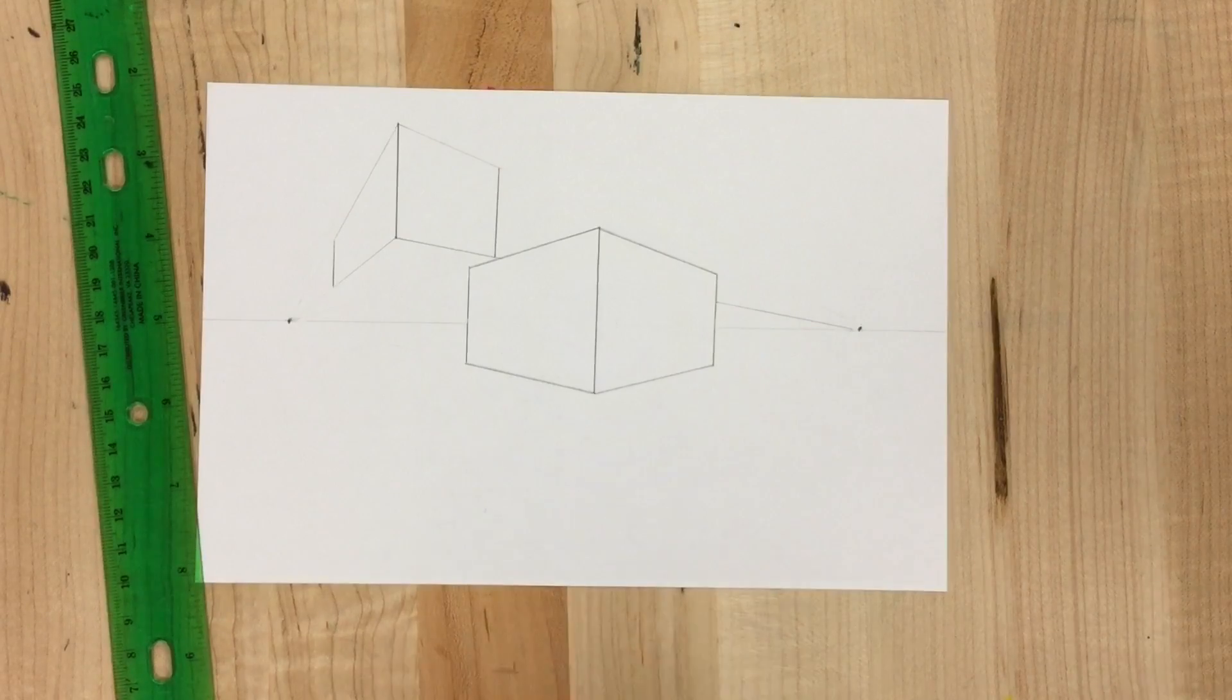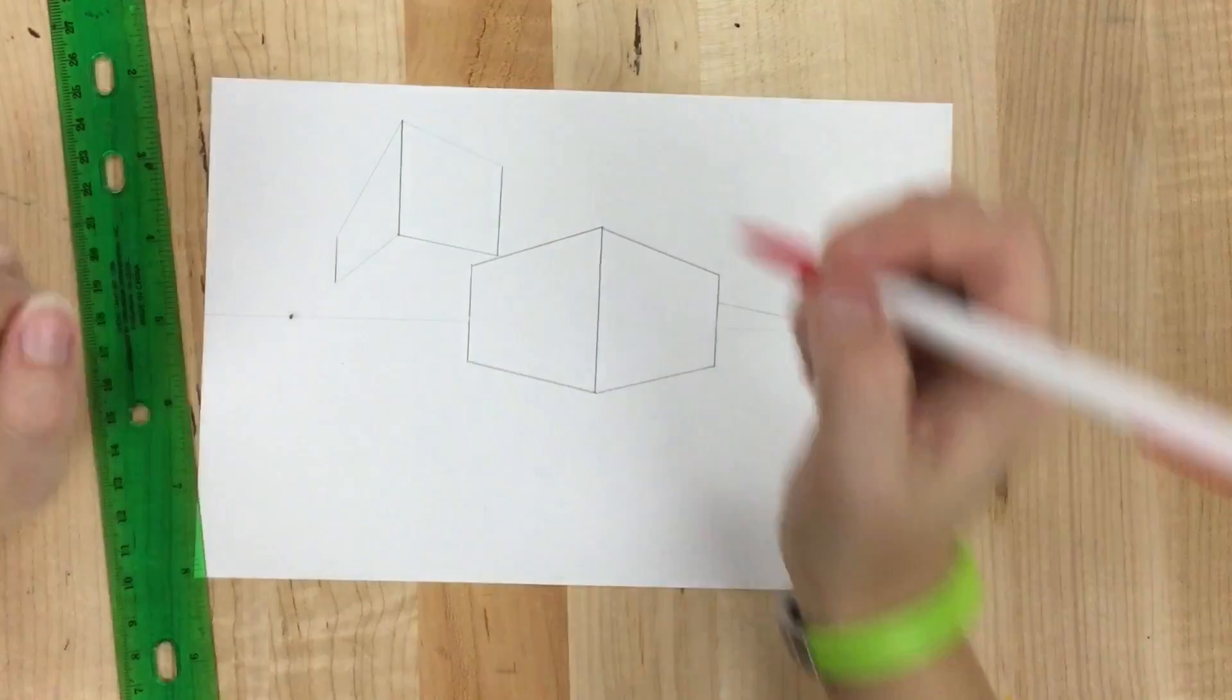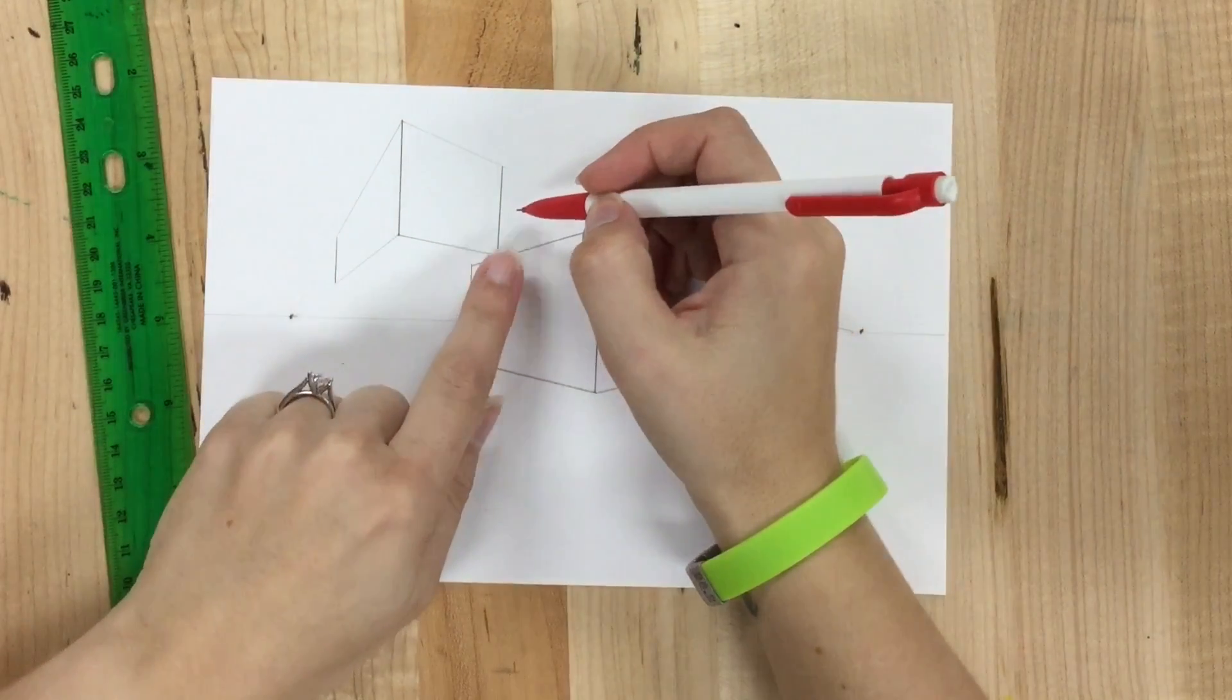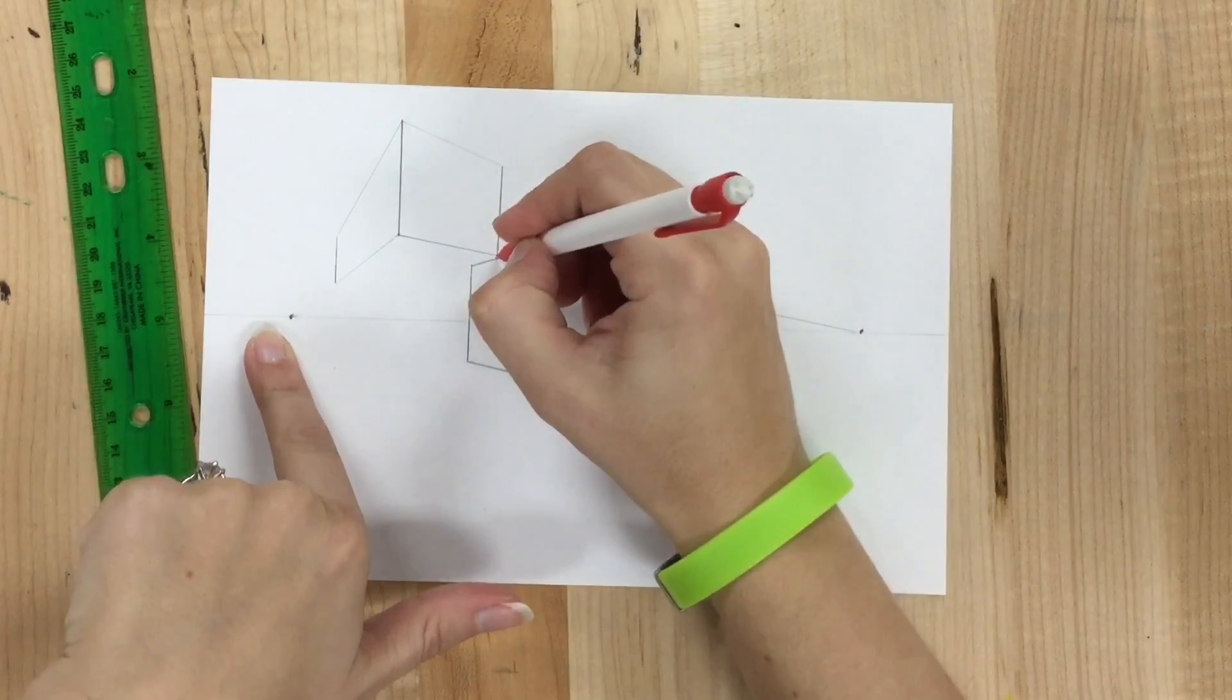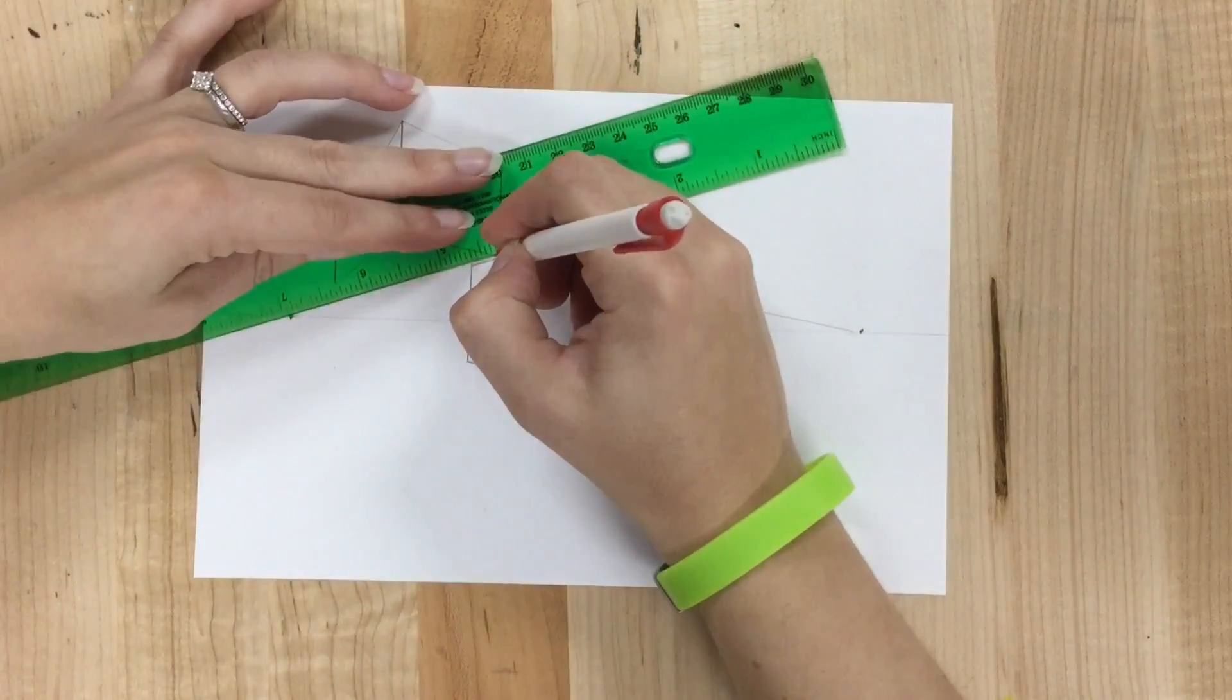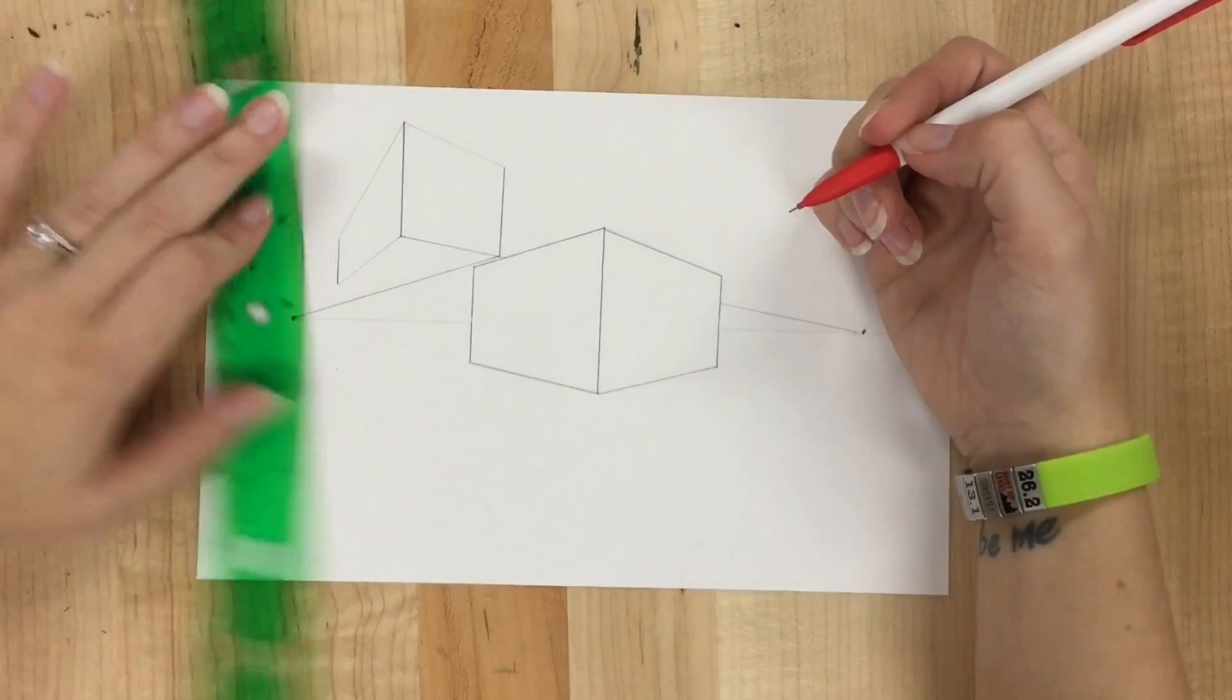Now I'm missing a side. When it's above my horizon line, I can see the bottom. So I need to connect my line on my right to my vanishing point on my left. And my line on my left to my vanishing point on the right.